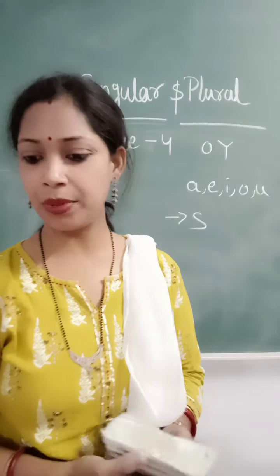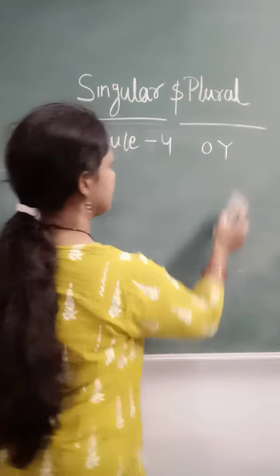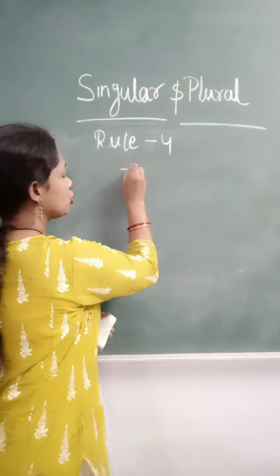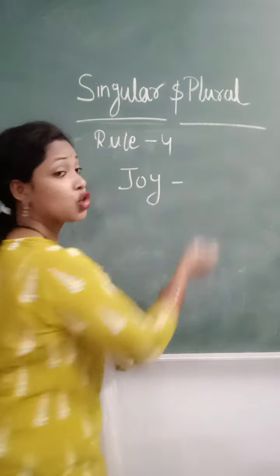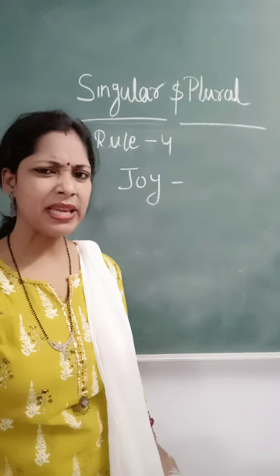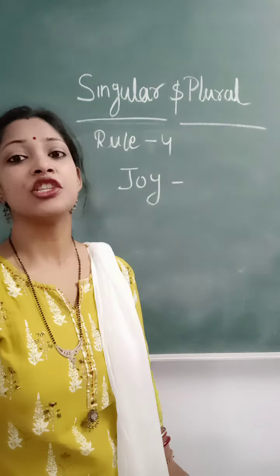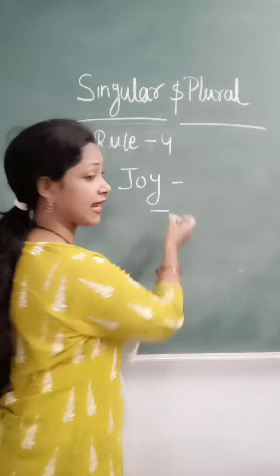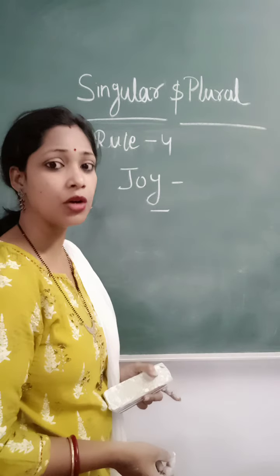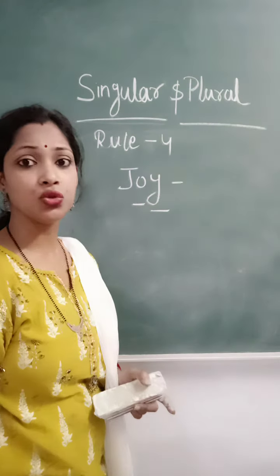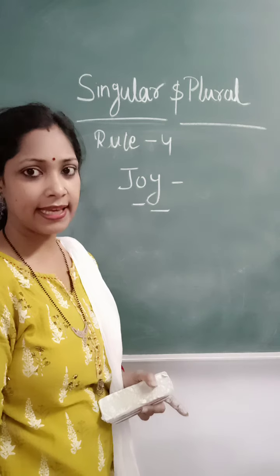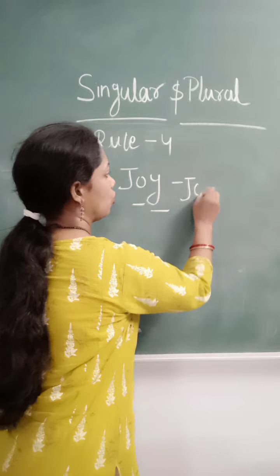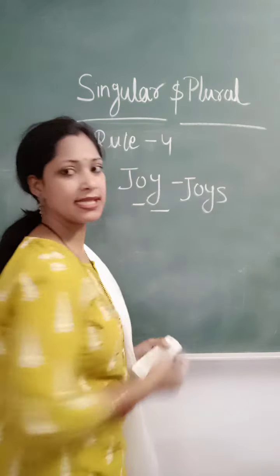Let's take an example. The word is joy — J-O-Y. Joy means happy, excited. Just look at the word: the last letter is Y and before that is a vowel, O. So what will be the plural of joy? It will be J-O-Y-S — joys.